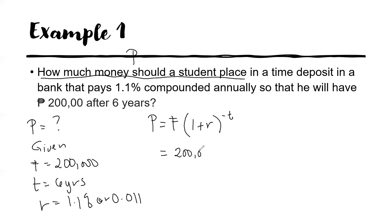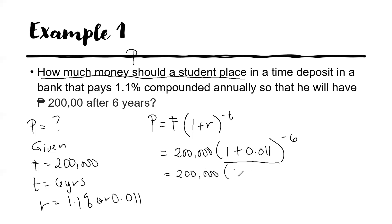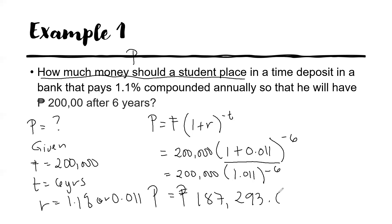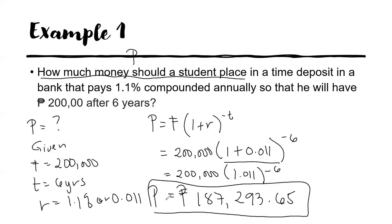The future value is 200,000 times 1 plus the rate which is 0.011 raised to negative 6. Performing the operation inside the parentheses first, we have 200,000 times 1.011 raised to negative 6. The present value is equal to 187,293.65 pesos. The student must place 187,293.65 pesos to have 200,000 pesos after 6 years.